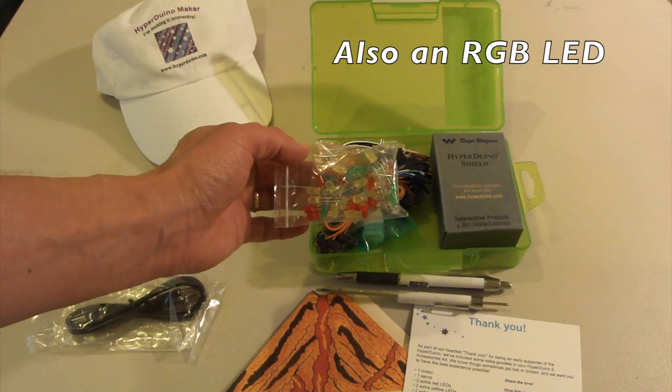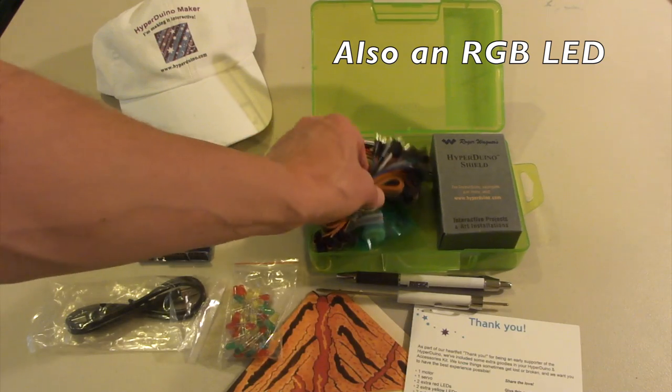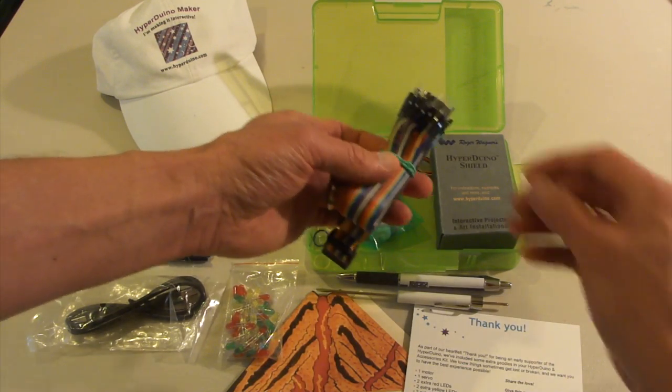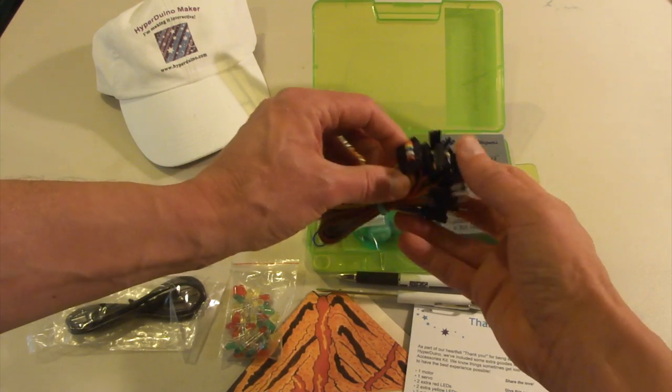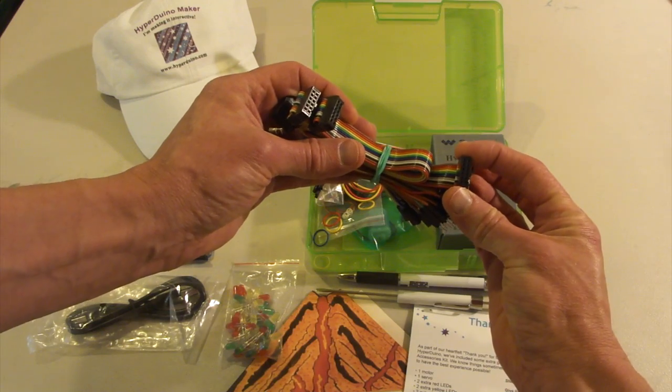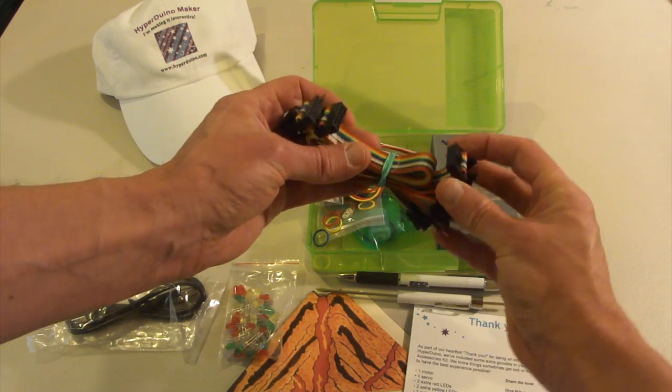Some LEDs so you can add lights to your kit. A whole heap of ribbon cables, some with just individual ones. And here's some ones, these look like eight pins or six pin. Six pin connectors.